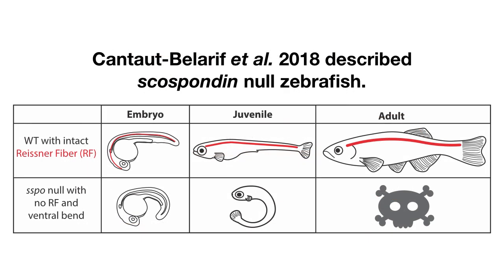A 2018 Current Biology report describes scospondin null zebrafish, where a wild type animal makes a Reissner fiber and straightens its body axis during early embryonic development. Scospondin null mutants never produce a Reissner fiber and fail to straighten their body axis, resulting in a C-shaped ventral bend, and they do not survive to adulthood.